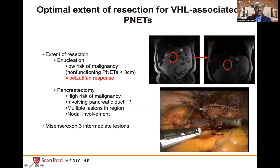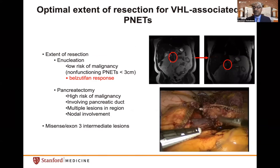Belzutifan is going to be a game changer in the management of patients with borderline or intermediate pancreatic neuroendocrine tumors. A patient with a three-centimeter tumor being considered for resection was started on therapy for renal cell carcinoma, and the tumor in the head of the pancreas almost completely disappeared on follow-up MRI. This patient did not need surgical intervention for his pancreatic neuroendocrine tumor.